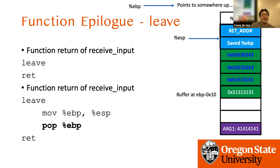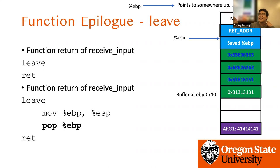Depending on the compiler, they generate different code. Some compilers prefer to pop EBP manually, while others use the leave instruction. For the buffer overflow challenges zero through four, I used a different compiler, so they have a different function epilogue. For challenges five through eight, the compiler uses leave and return.